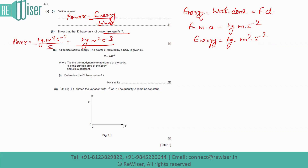We need to determine the SI base unit of k. Since T is thermodynamic temperature, it has base units of kelvin (K). A is the surface area, so it has units of m². To find the base units of k, we rearrange the formula: k = P / (A·T⁴), where P is the radiated power.